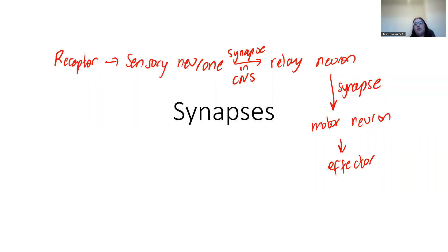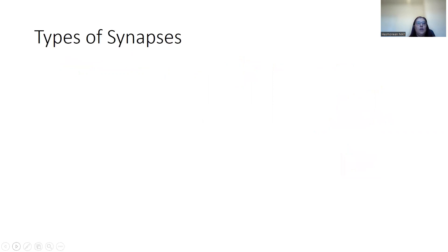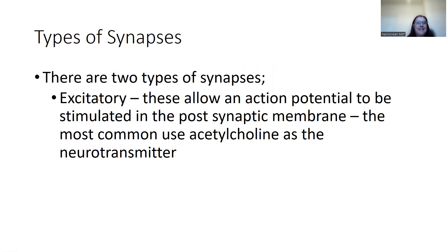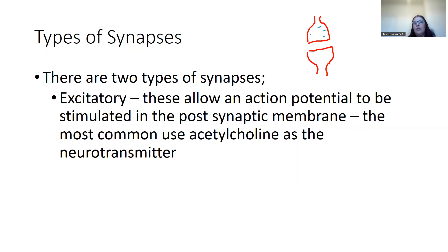We know from GCSE that it involves neurotransmitters — chemicals — but we're going to look more precisely at that. There are two types of synapses. The first is called excitatory — from the word excite. These allow an action potential to be stimulated in the postsynaptic membrane. An action potential that arrives in the presynaptic neuron will be transmitted across and cause an action potential in the postsynaptic neuron. The most common neurotransmitter here is acetylcholine, though there are others.